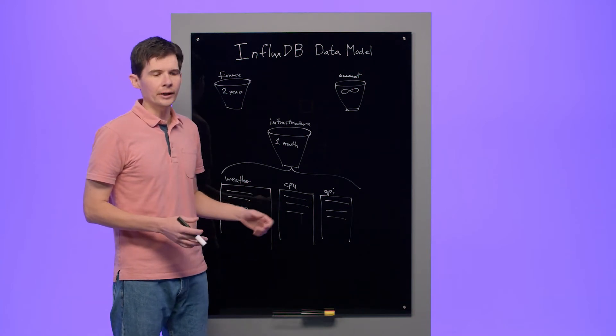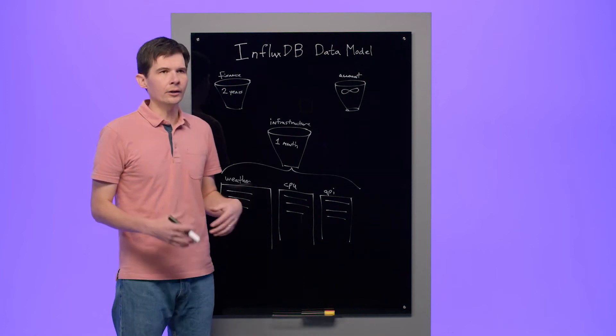Measurements are grouped into buckets. If you understand relational databases already, then you might think of an InfluxDB measurement like a relational table, and an InfluxDB bucket like a relational database.